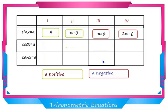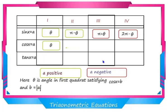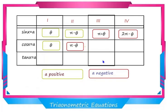Similarly, for cos x = A, find θ such that cos θ = |A|. In the first quadrant cos is positive, so θ is one solution. If A is positive, cos is also positive in the fourth quadrant, so the principal solutions are θ and 2π − θ. If A is negative, cos is negative in the second and third quadrants, so the principal solutions are π − θ and π + θ.